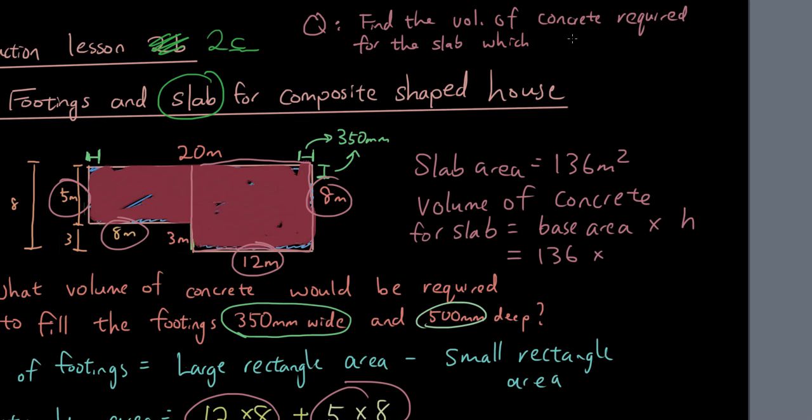Which is however many millimeters thick. Let's do 150 millimeters thick. So you're going to convert that to meters, which is divided by a thousand, so 0.15.